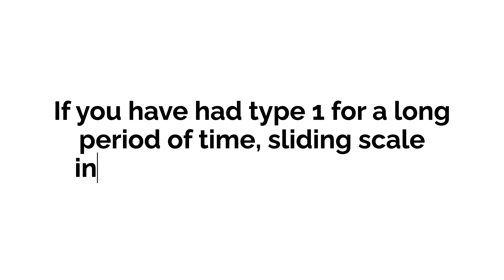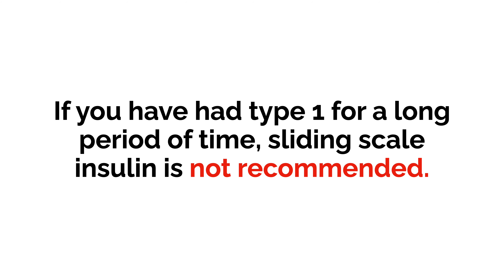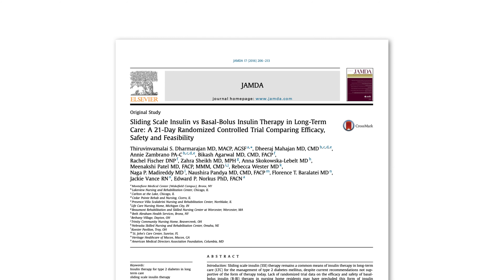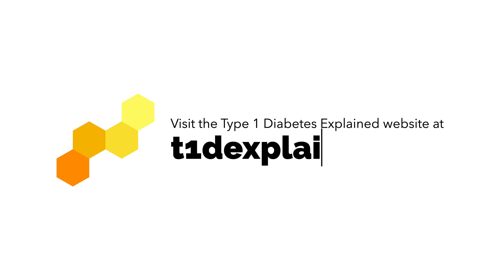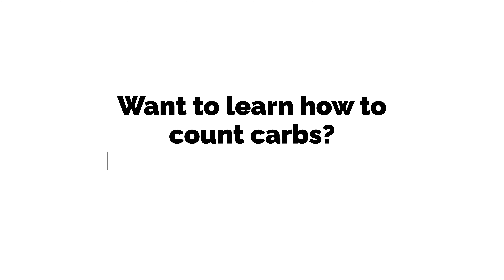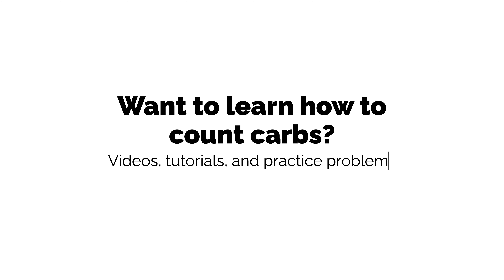If you have had Type 1 for a long period of time and are used to doing carb counts, it is not recommended that you use a sliding scale. Many studies argue that sliding scale insulin is an outdated technique that shouldn't be used regularly. If your doctor or another medical professional has instructed you to use sliding scale insulin, you can find more resources and instructions on how to do so on the Type 1 Diabetes Explained website linked below, including some problems that allow you to practice using a sliding scale in several different scenarios. If you are interested in learning how to count carbohydrates, you can also find several instructional videos with practice problems linked below.